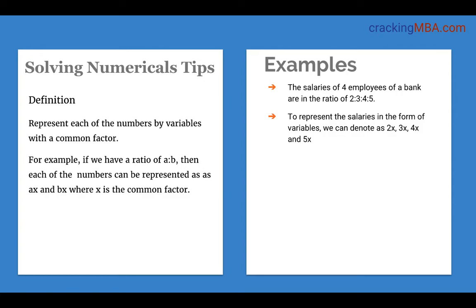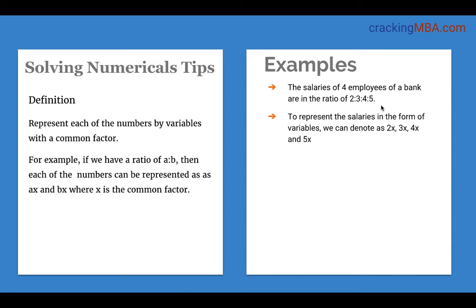For example, the salaries of four employees of a bank are in the ratio 2 to 3 to 4 to 5. We don't know the individual salaries, but we know they are in the ratio. So we multiply by a common factor X and assume the values are 2X, 3X, 4X, and 5X. If the question says the lowest salary is 100, then we know 2X equals 100, because 2X is the lowest. Similarly, depending on whatever question comes, you can always answer it.